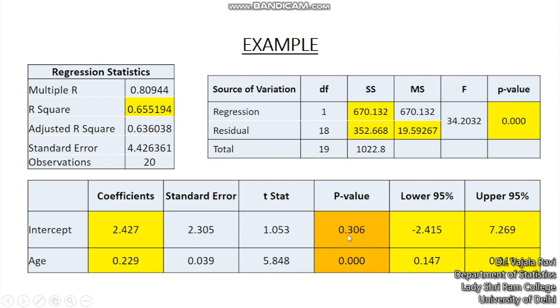The p-value for the t-test is 0.306. Since this is greater than 0.05 we may accept the null hypothesis and conclude that this intercept of 2.427 is as good as 0. The p-value here is less than 0.05 so we may reject the null hypothesis and conclude that this 0.229 should be taken as significantly different from 0.